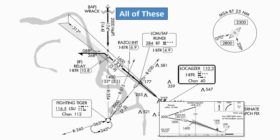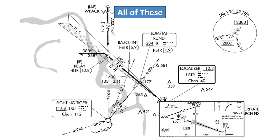All of these can be used to identify the final approach fix, which is the Rundi intersection. We know Rundi is the final approach fix by the Maltese cross symbol shown there on the profile view. The shaded football-shaped symbol on the plan view indicates a marker beacon located at the FAF. The DME distance at Rundi is shown as 4.9, and the 030 radial from the Fighting Tiger VOR can be used to identify Rundi. Besides these, if you had GPS, you could of course use that to know where Rundi is.